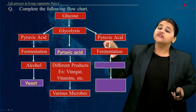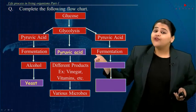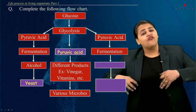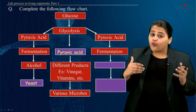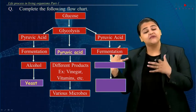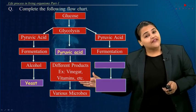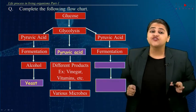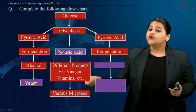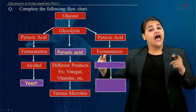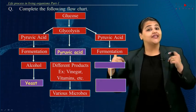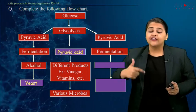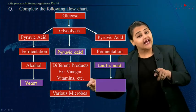Glycolysis forms pyruvic acid which will then form different products like vinegar, vitamins, etc., and all of these are done by various microbes. Today, industries utilize this process as well.